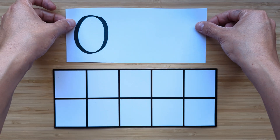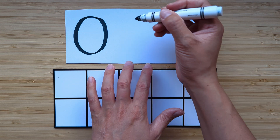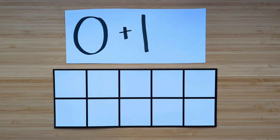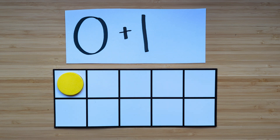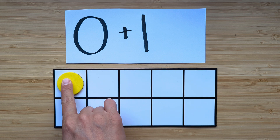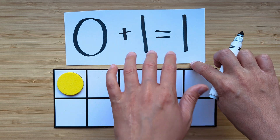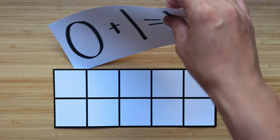Let's try the next one. Make the number zero. Good job. What's one more than zero? Point and count. One. One is one more than zero. Nice job. Clear off your boards.